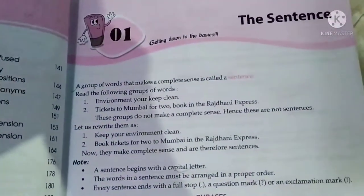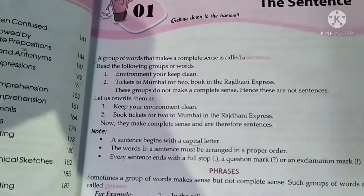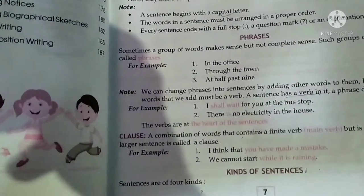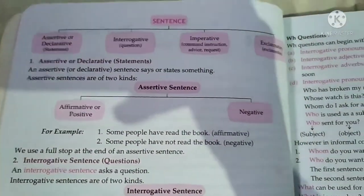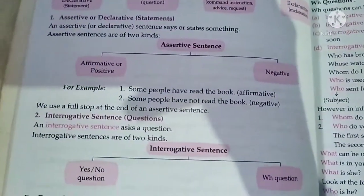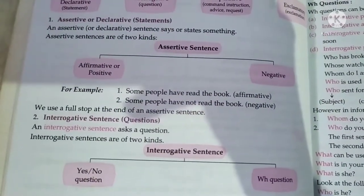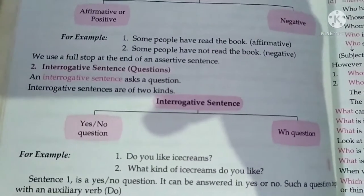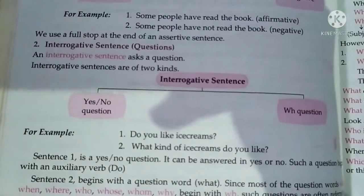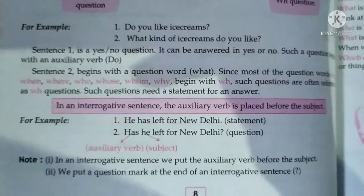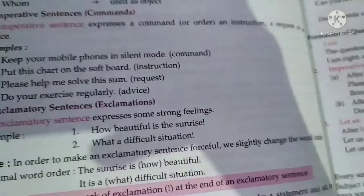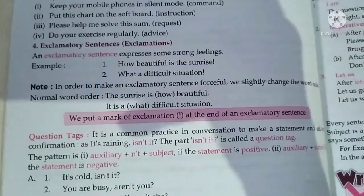Now talking about grammar — you know which things you have to read. A sentence is a group of words; read phrases and definitions, everything. Kinds of sentences: what is a clause, what are phrases — everything is important. How many types of sentences are there? Four types. Assertive sentences are of two kinds: affirmative or positive, and negative. Interrogative sentences ask a question and are of two kinds: yes/no questions and wh-questions. Read this part also — it's important.